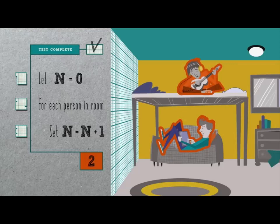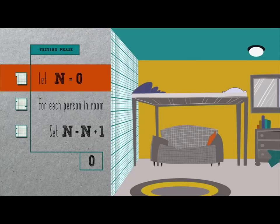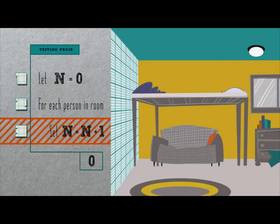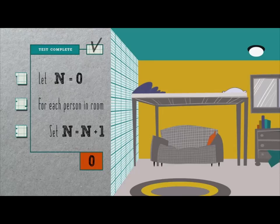How about a corner case? Suppose that there are zero people in the room, besides me who's doing the counting. In line one, we again initialize n to zero. This time, line three doesn't execute at all, since there isn't a person in the room, and so n remains zero, which indeed matches the number of people in the room.